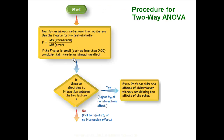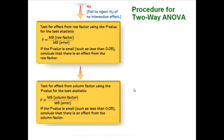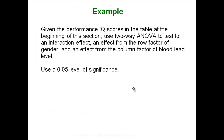Here is a visualization of what is going on. First we test: is there an interaction effect? If there is, we are done — just stop, there is nothing else to do. But if there is no interaction, you can go on and test for a row effect or a column effect, meaning how you are categorized with the row variable or the column variable somehow influences your average.